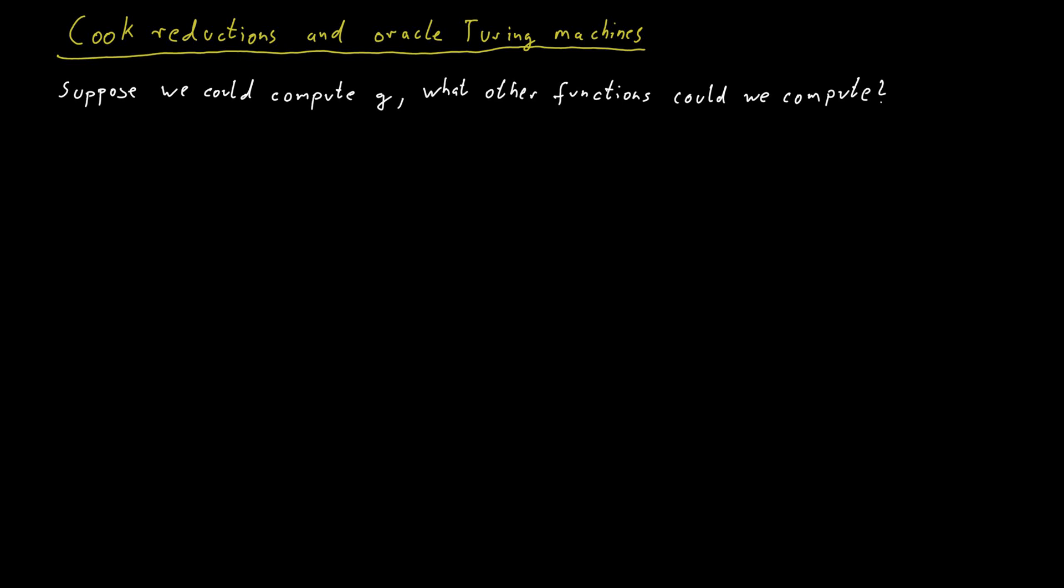So in pseudocode, you might get something like this. You do some standard computation steps like V equals A plus 3, and then B equals 3 times A, and so on. And then at certain points, you call this procedure for function G.